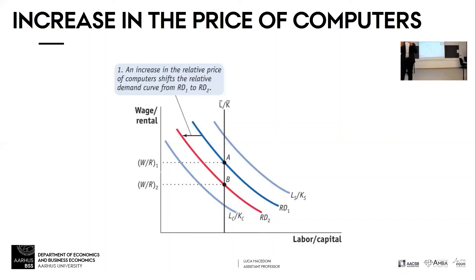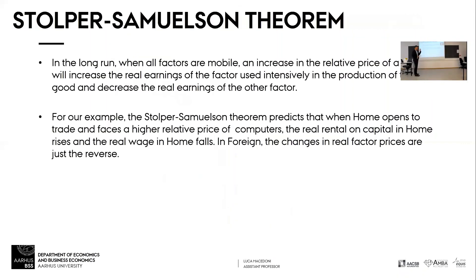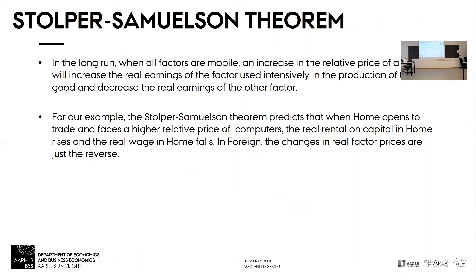The home economy was capital abundant and exports the capital intensive good. This is the so-called Stolper-Samuelson theorem: if the price of the capital intensive good increases, the capital owner gains and the workers lose. If instead the price of the labor intensive good increases, the workers gain and the capital owners lose.